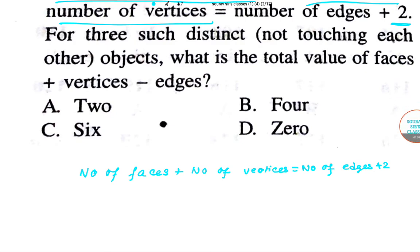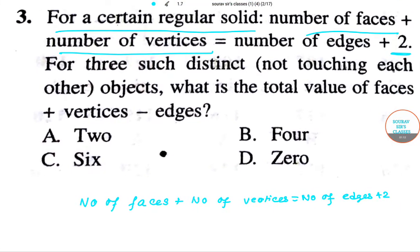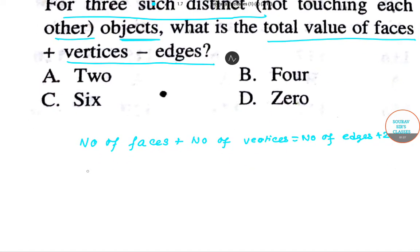Now let's see what we have asked here. For three such distinct, not touching each other objects, what is the total value of faces plus vertices minus edges? This is simple, so what we can do from this is take this common and we can do it like faces plus vertices minus edges.